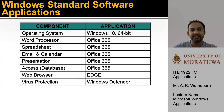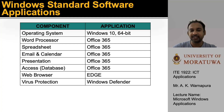These are the standard software applications that run on the Windows operating system. For example: word processor, spreadsheet, email and calendar, presentation, and database — those are inside the package of Microsoft Office 365. And for web browsers, you can use Microsoft Edge, Google Chrome, or Firefox. For virus protection, Windows Defender is the built-in application, or you can use third-party applications like Kaspersky, McAfee, or Bitdefender.